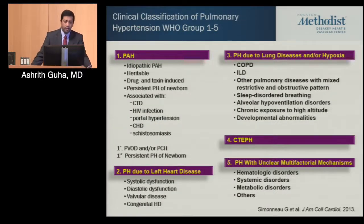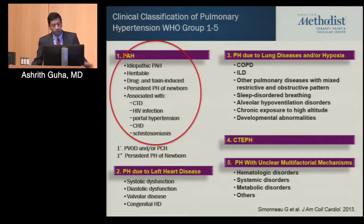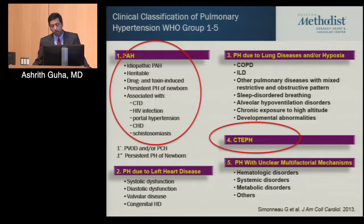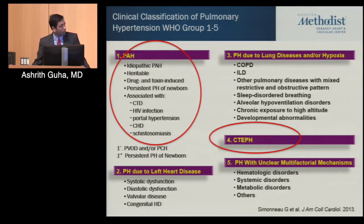Going over the clinical classification, updated in 2013: group one is PAH, which includes idiopathic pulmonary arterial hypertension, drug and toxin induced, and connective tissue disease — earlier known as primary pulmonary hypertension. The changes in 2013 moved some PAH diseases under group five, PVOD was separately classified, and group four is chronic thromboembolic pulmonary hypertension. These two groups are where we have approved, disease-specific therapies shown to improve survival and quality of life.